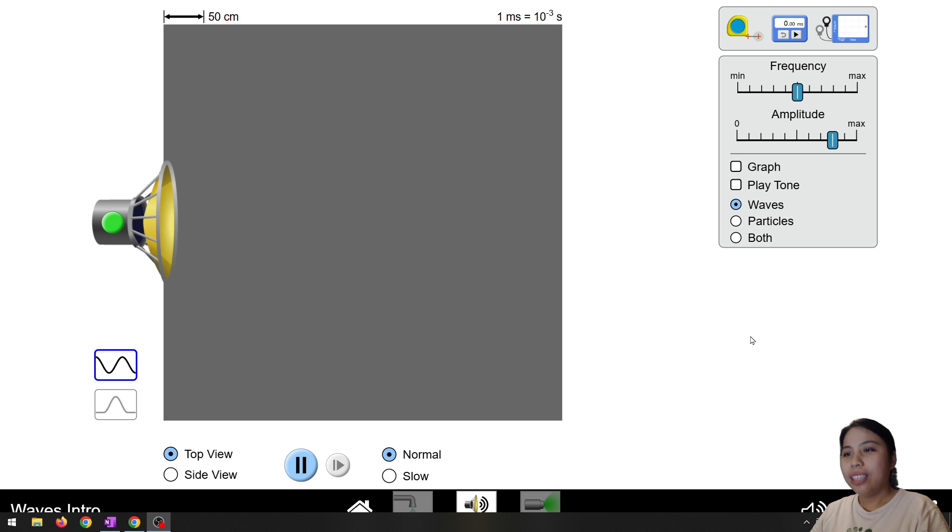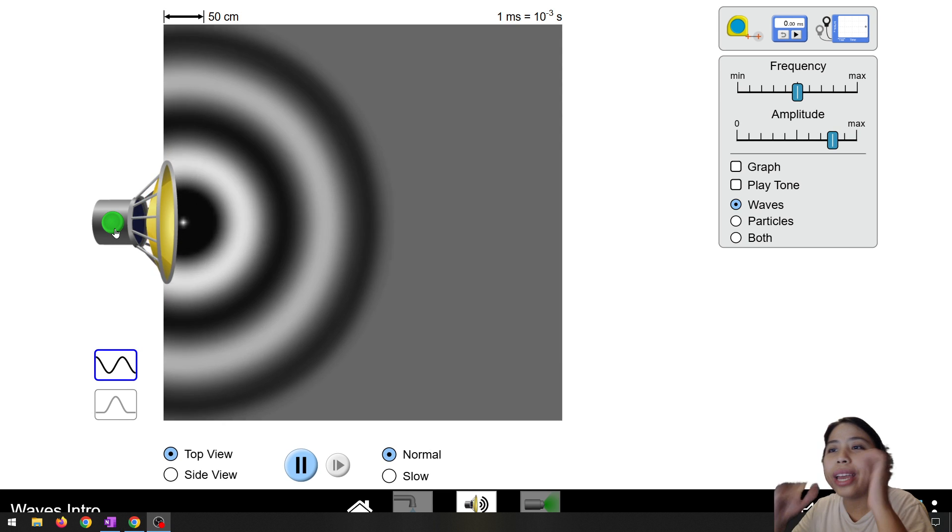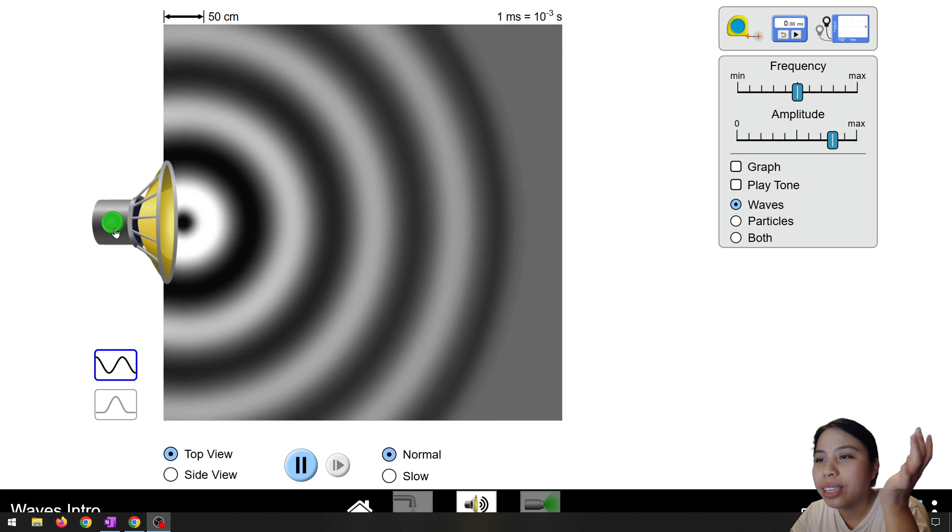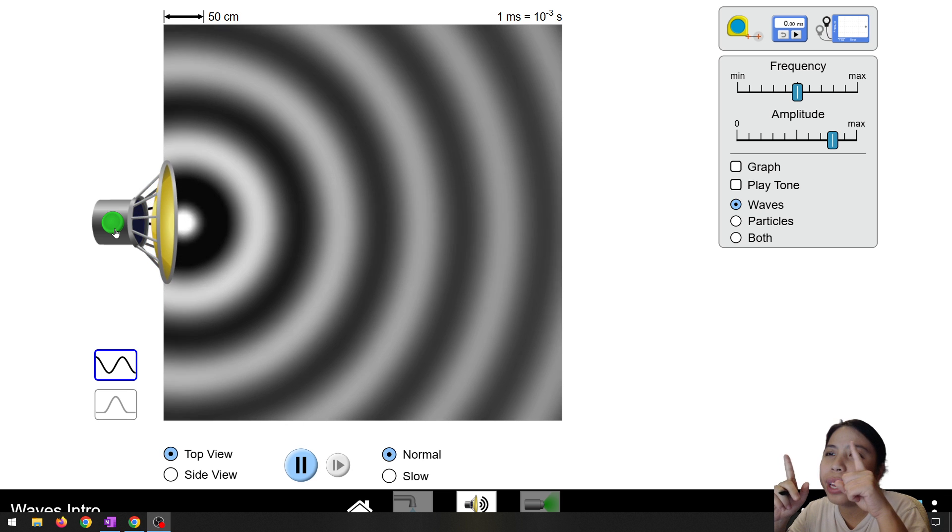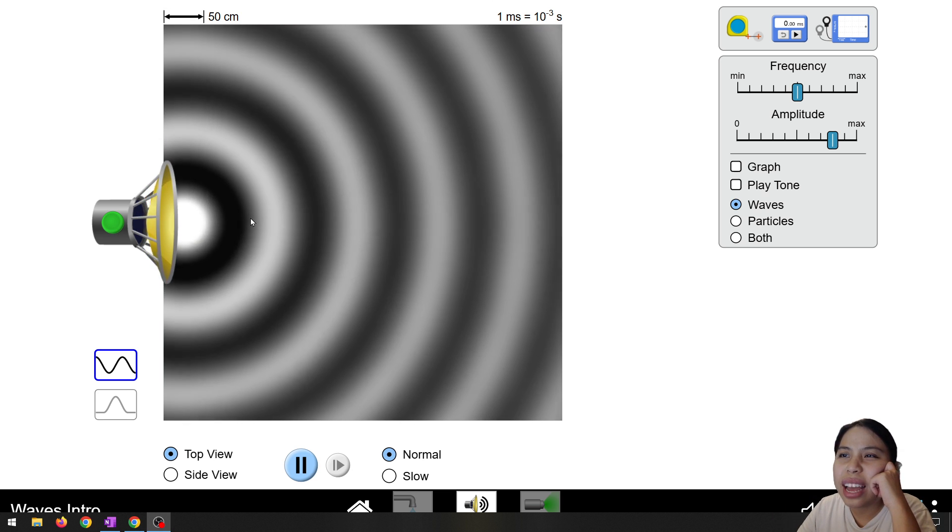As you can see behind me, there's this speaker. Let's make the speaker make a sound. This is the wave you see spreading out. Now you notice something about that wave. As it goes further out, let's say here, it's not as dark.